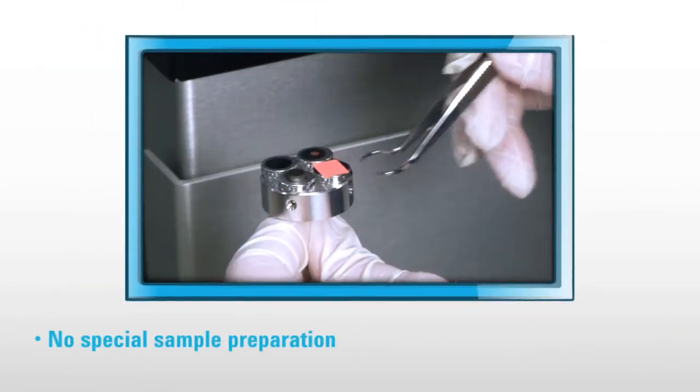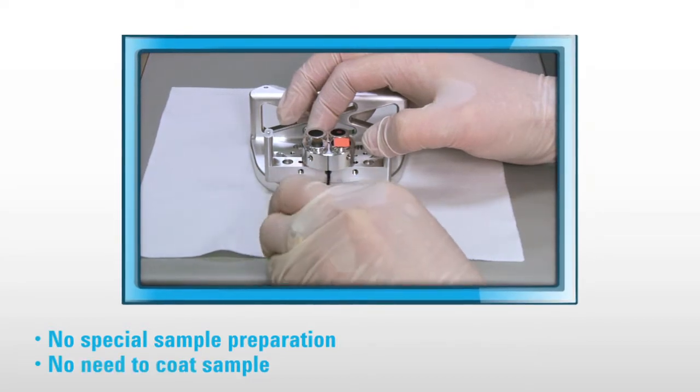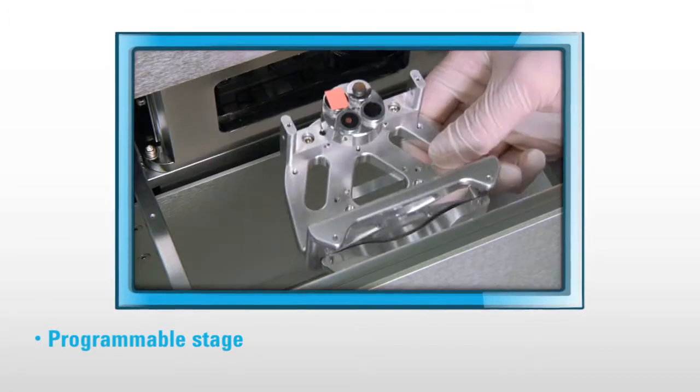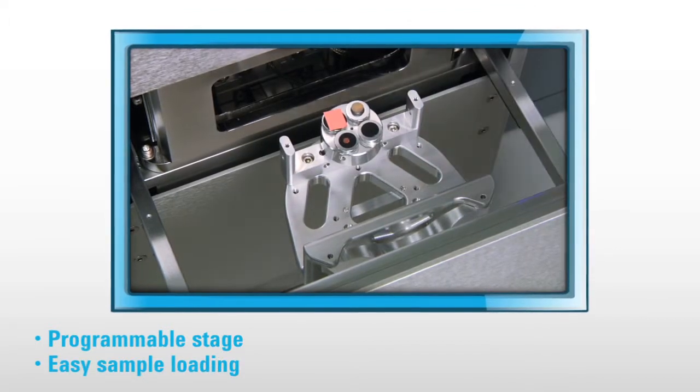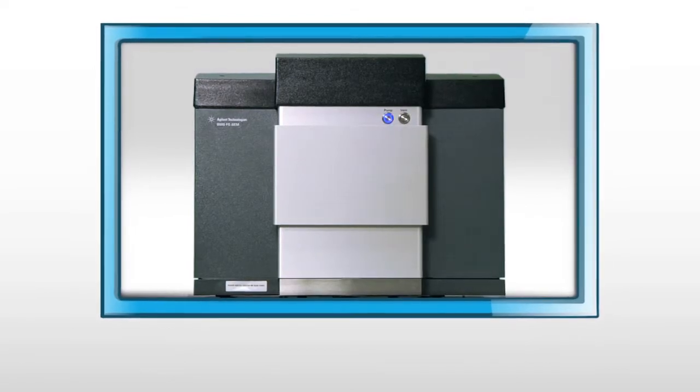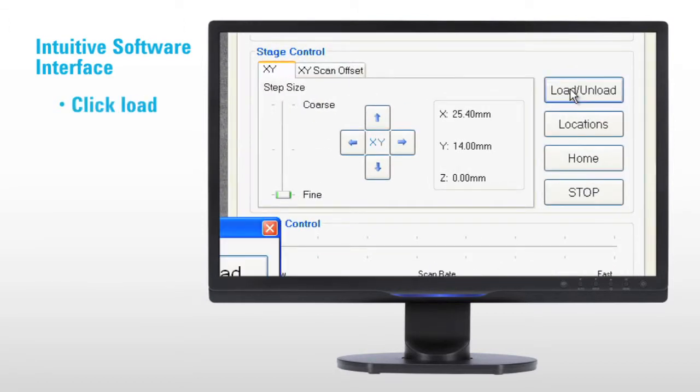There are no special sample preparation requirements, and typically you don't even need to coat samples for imaging. The programmable stage allows you to easily find regions of interest on the sample or move between samples if multiple samples are loaded into the instrument. It allows you to set and store precise coordinates for areas of interest.